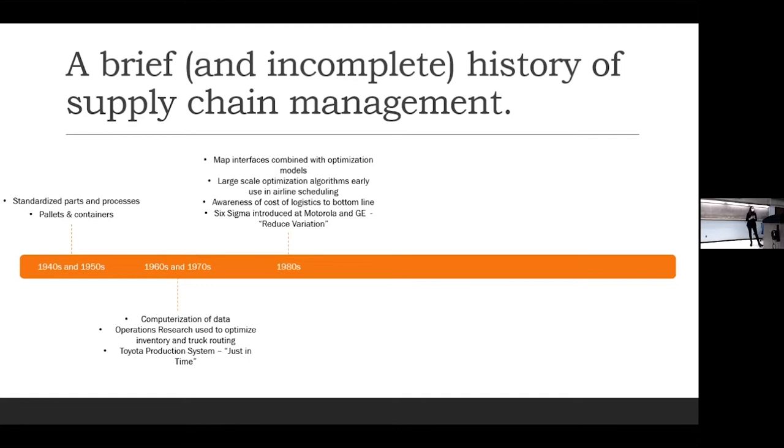In the 80s, we saw things like mapping, so geospatial mapping being part of optimization models. So now you can not just look at things on a table or on a tableau of something, but you could look at them spatially. We had things like algorithms being used for airline scheduling. We also had things like suddenly logistics was very expensive and executives were like, why does this cost us so much to move product around? We need to take this out of our bottom line because we don't want to pay for this. And then the other thing in the 80s was something called Six Sigma. It was introduced at Motorola and GE. This is a system that really focuses on reducing variation. So as you're producing something, try to standardize it as much as possible to take any variation out of the process so that every time you do something, it happens the same way.